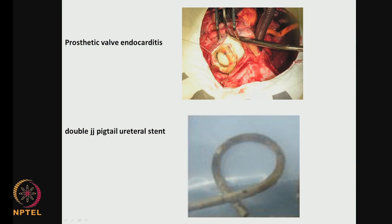This is a prosthetic valve — you can see a lot of biofilm growth. Look at this — this is an ureteral stent, called a double JJ pig tail ureteral stent. You can see bacterial infection. Generally in the urinary region you may have bacteria like E. coli or Proteus mirabilis. So biofilm is very common in medical implants.